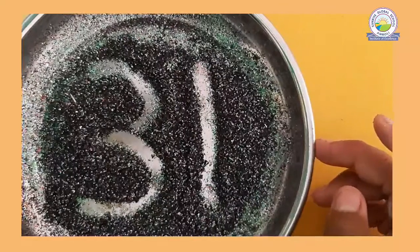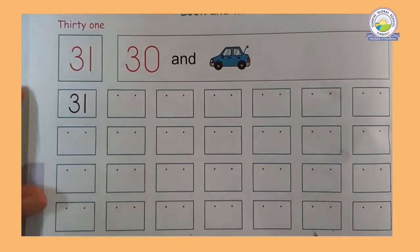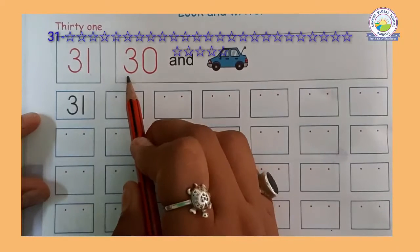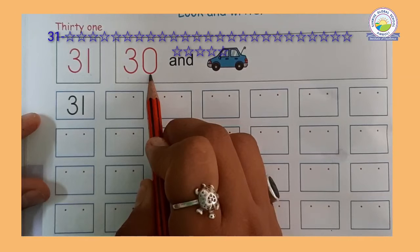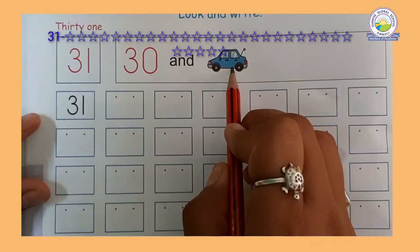Now let's write on the textbook. Okay, so look here. 3, 0, 30. After 30, which number will come? 31. 31.